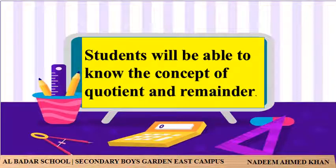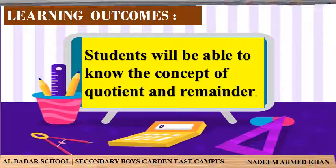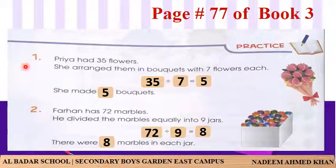آج ہم quotient اور remainder کا concept سمجھیں گے۔ page number 77، book 3، question number 1: پریہ کے پاس 35 پھول تھے، اس نے انہیں گلدستوں میں 7 پھولوں کے ساتھ ترتیب دیا۔